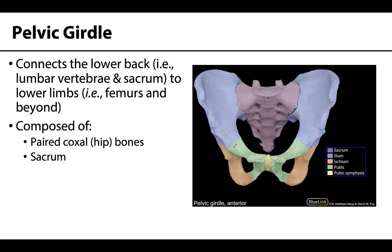The pelvic girdle is officially formed by the paired coxal bones, which goes by many different names. You'll hear coxal bones, another very common term is simply the hip bones, and there are some other terms you may hear as well. These bones will articulate with the sacrum, one of the distal portions of the spinal column, which is going to be the posterior portion of the pelvic girdle.